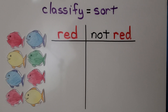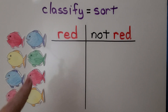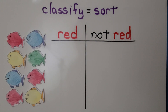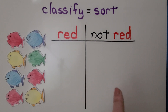We can classify objects by their color. Here we have a set of red fish and not-red fish. We can sort these fish by their colors following the rule that all red fish go on the left side and all not-red fish go on the right side.